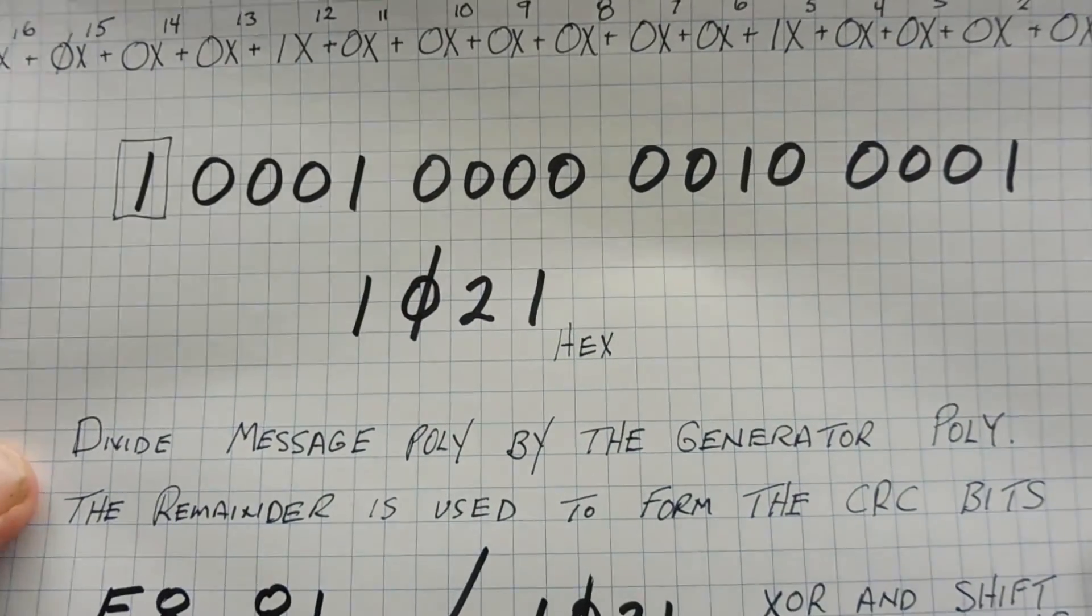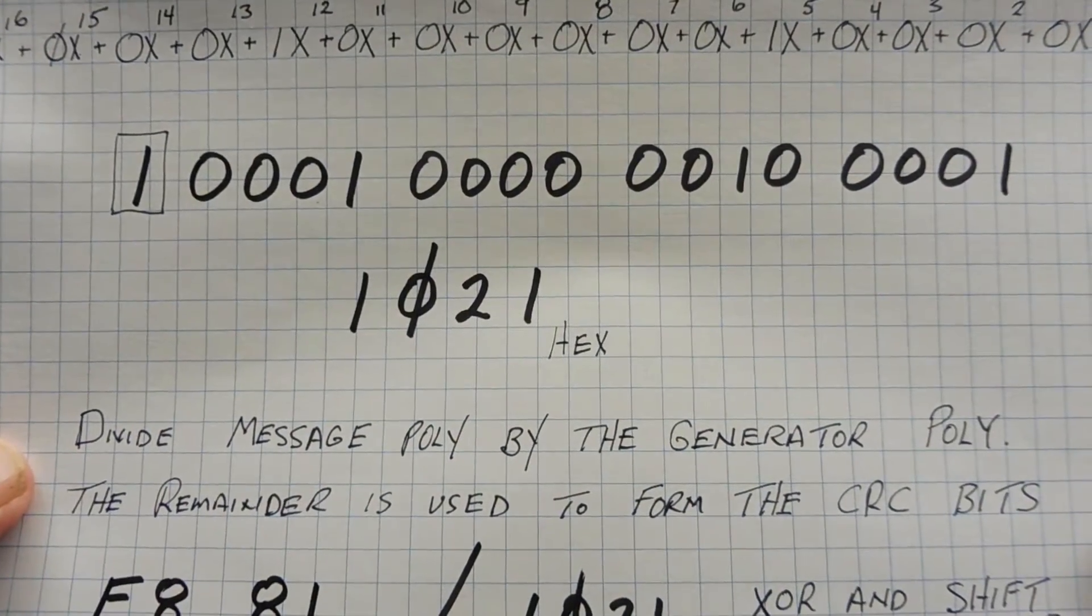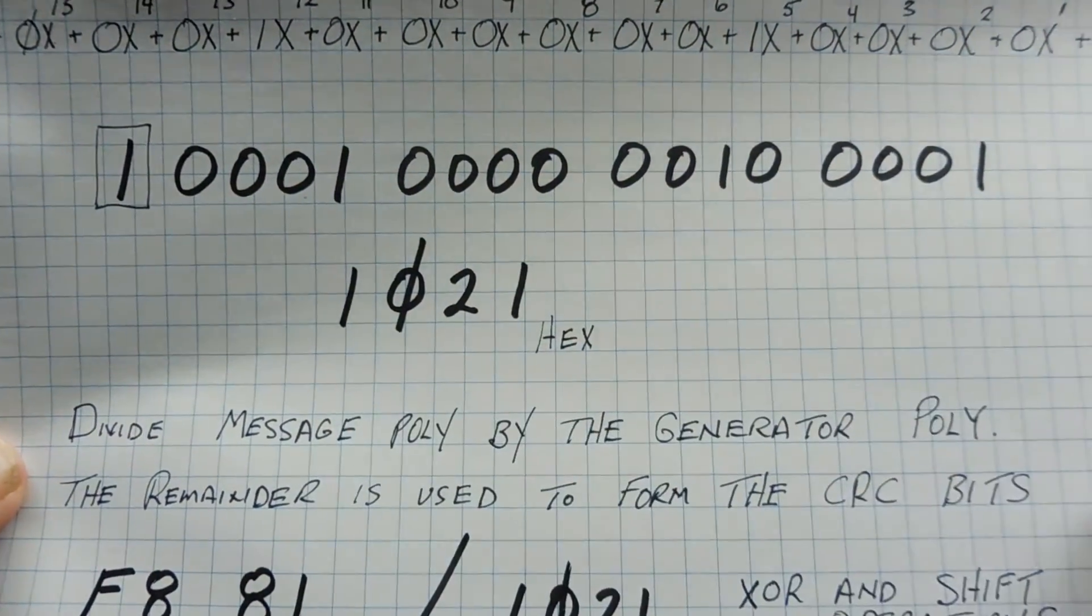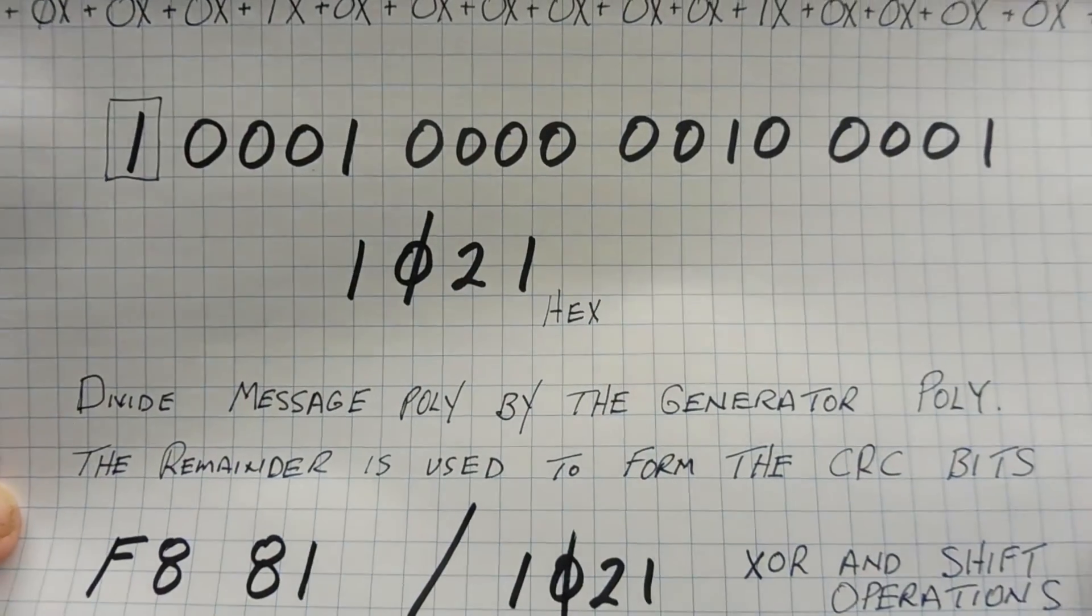So we divide the message polynomial, that's our data, by the generator polynomial, which we just saw above here, 1021, and the remainder is used to form the CRC bits.